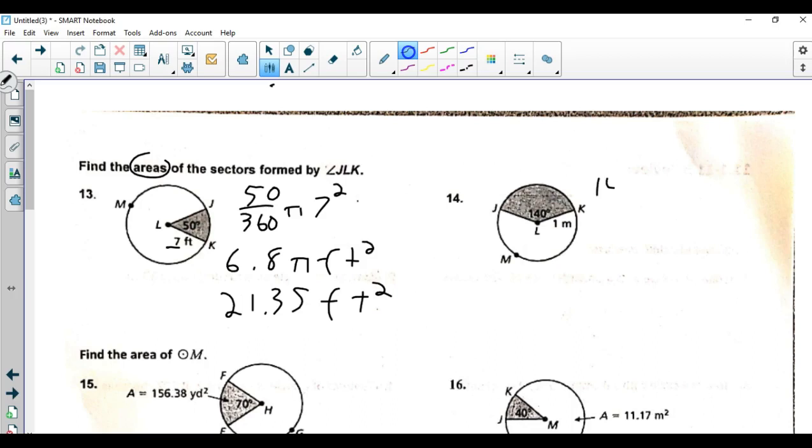Same setup here. 140 central angle divided by 360 times pi. And then, 1 squared, which is just 1. So, basically, we're just doing 140 over 360 times pi. So, that's .39 pi meter squared. Or, if I multiply it out, 1.22 meter squared.